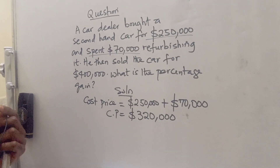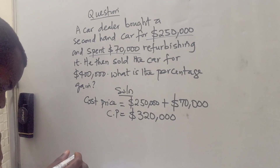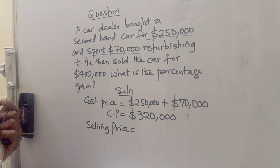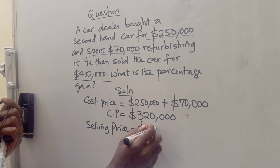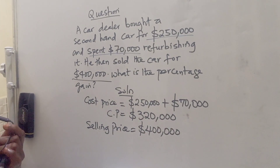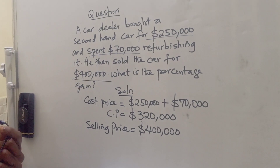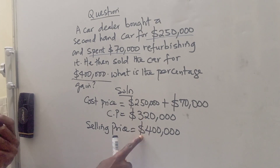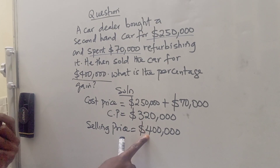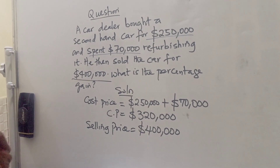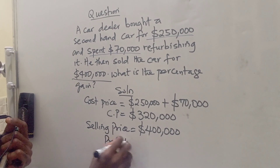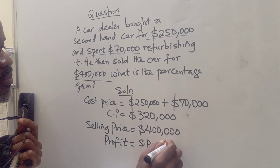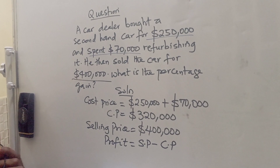Now, what about the selling price? The selling price of the car from the question is $400,000. So he spent a total of $320,000 as his cost price, and he sold it for $400,000 — meaning he made a profit. Our profit is going to be the selling price minus the cost price.